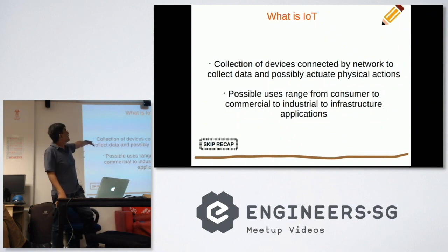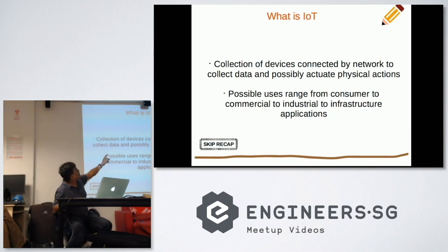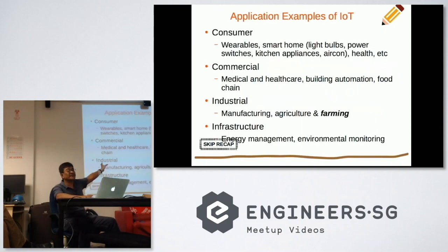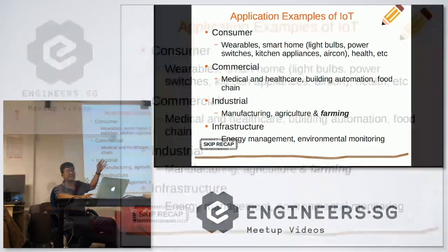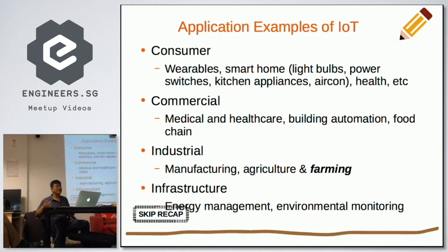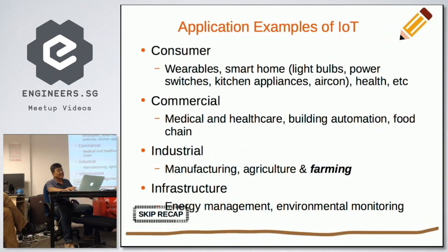Just like Netflix. IoT is a collection of devices connected by network to collect data and possibly actuate physical actions. Possible users range from consumer to commercial and all the way to infrastructure applications. Some examples for consumers include wearables, smart home, light bulbs, health, etc. For commercial applications, we have medical and healthcare, building automation, food chain, supplies, and logistics. Then industrial and infrastructure — you can see that the applications get bigger and bigger in terms of scale.